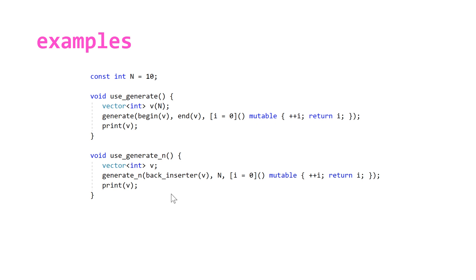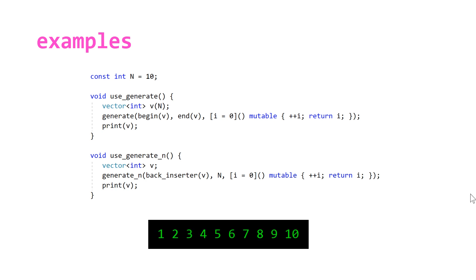The second function is very similar, but instead of the fill constructor we use the default constructor, so initially the size is zero. We then make a call to generate_n, passing a back_inserter(v) instead of begin(v), which gives us an output iterator to the end of our currently empty vector. We pass it the number of elements n and the same lambda. Both functions print elements with spaces between them, giving us 1 to 10.